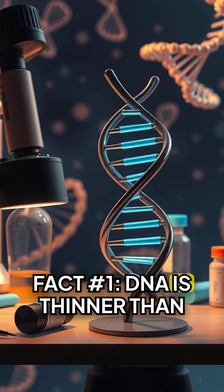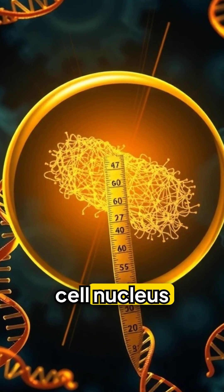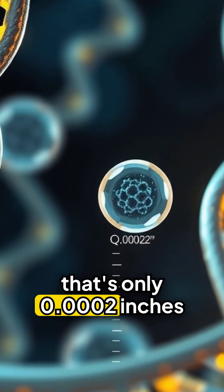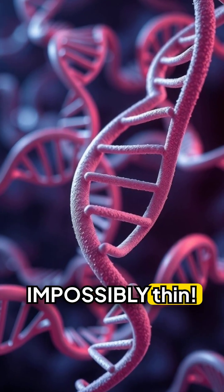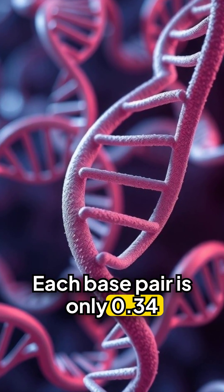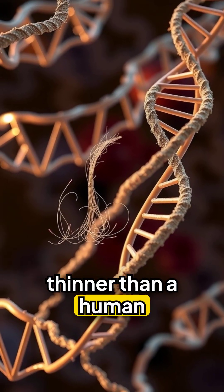Fact number 1. DNA is thinner than you can imagine. How does 6 feet of DNA fit into a cell nucleus that's only 0.0002 inches across? Because DNA is impossibly thin. Each base pair is only 0.34 nanometers long. That's 1,000 times thinner than a human hair.